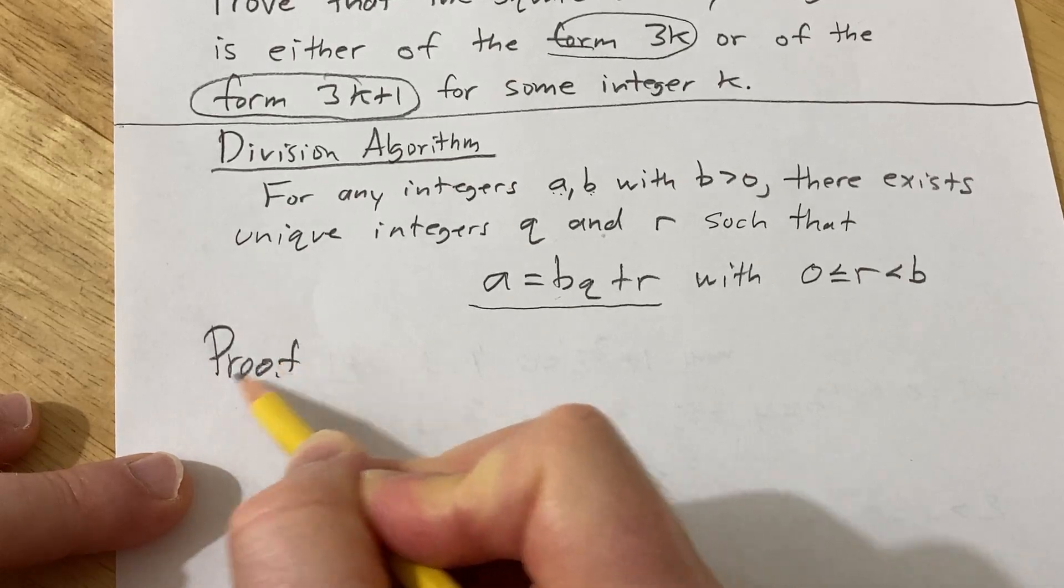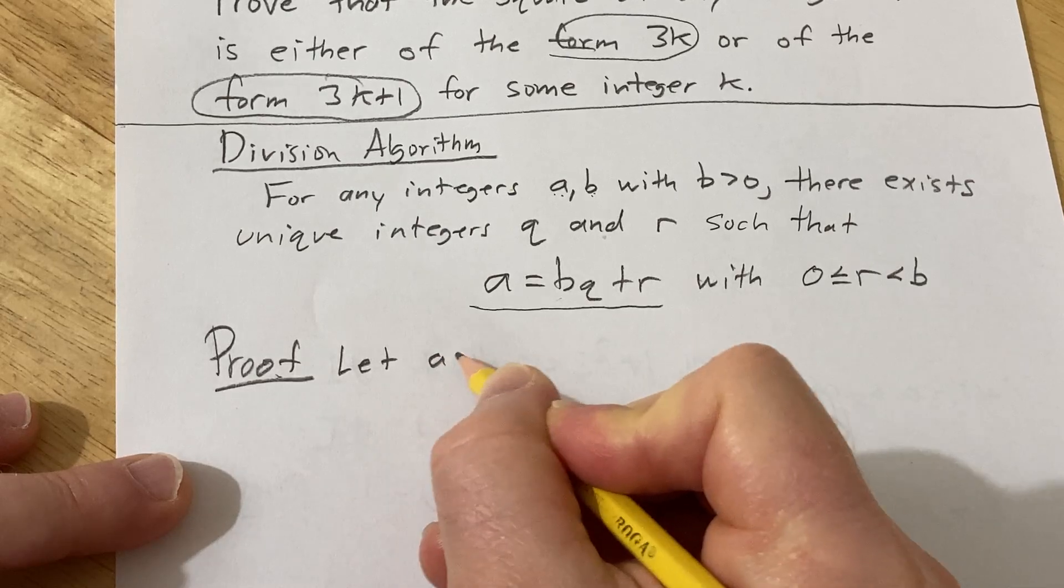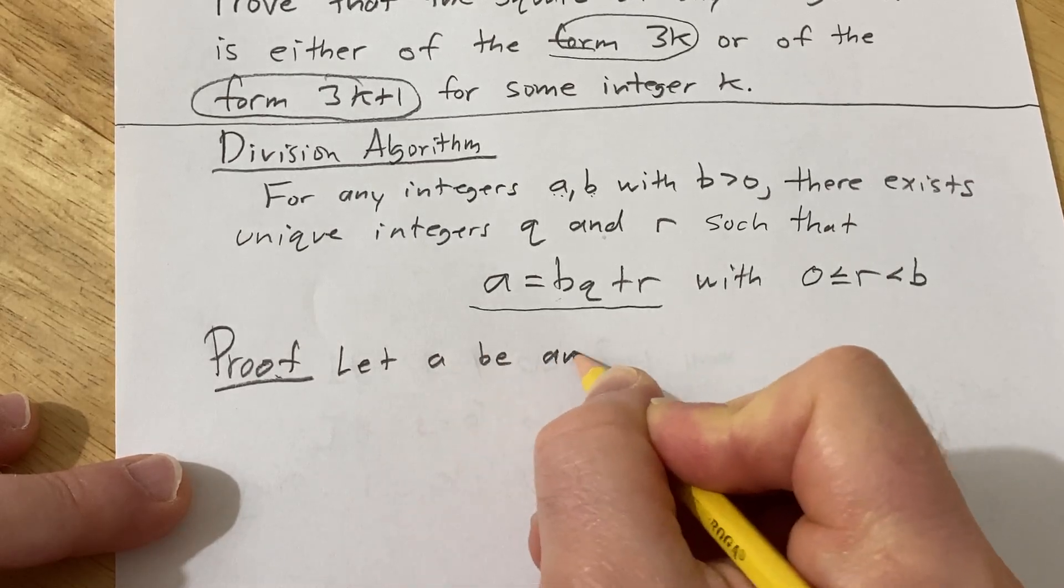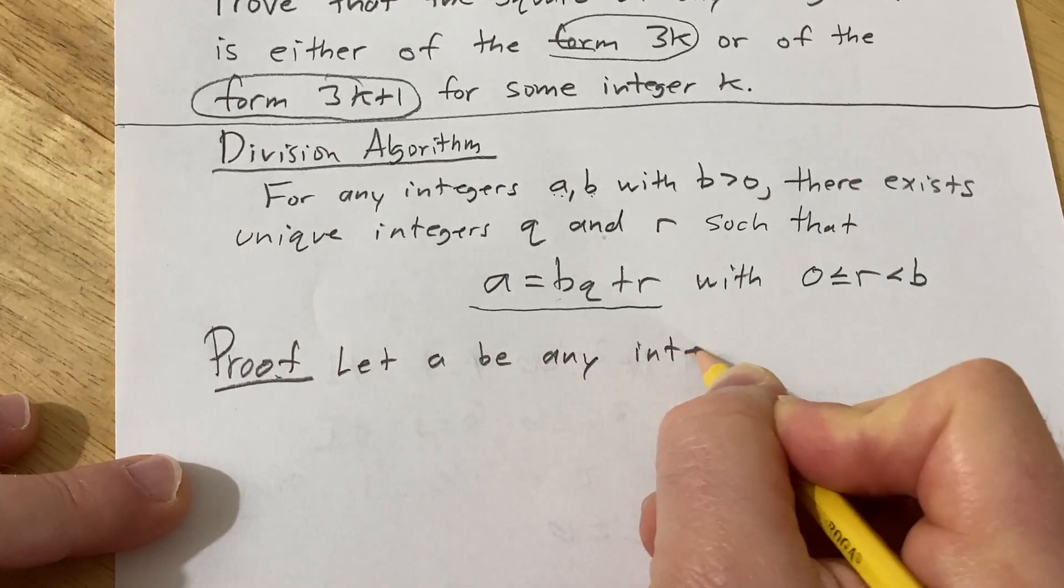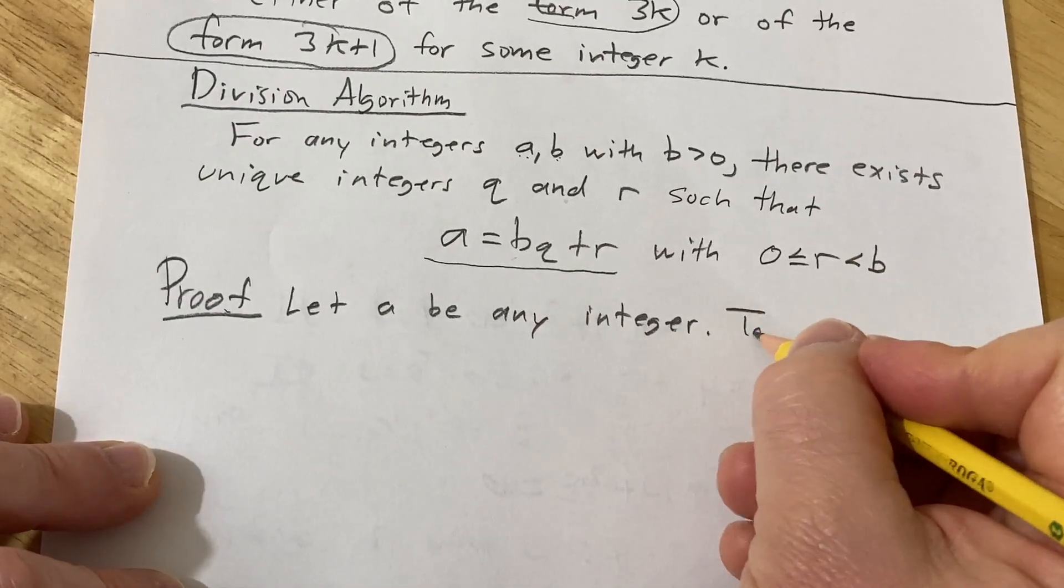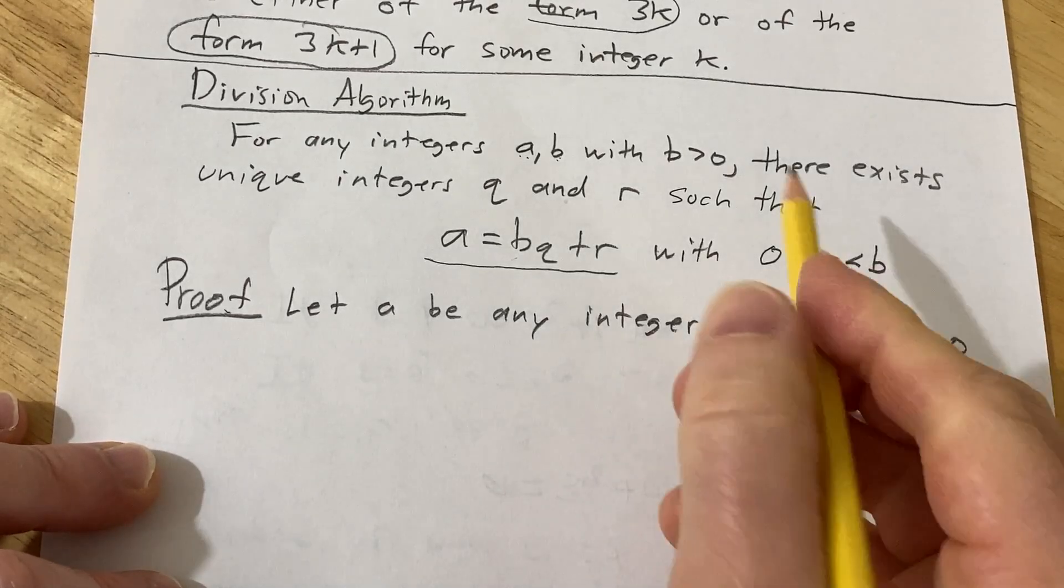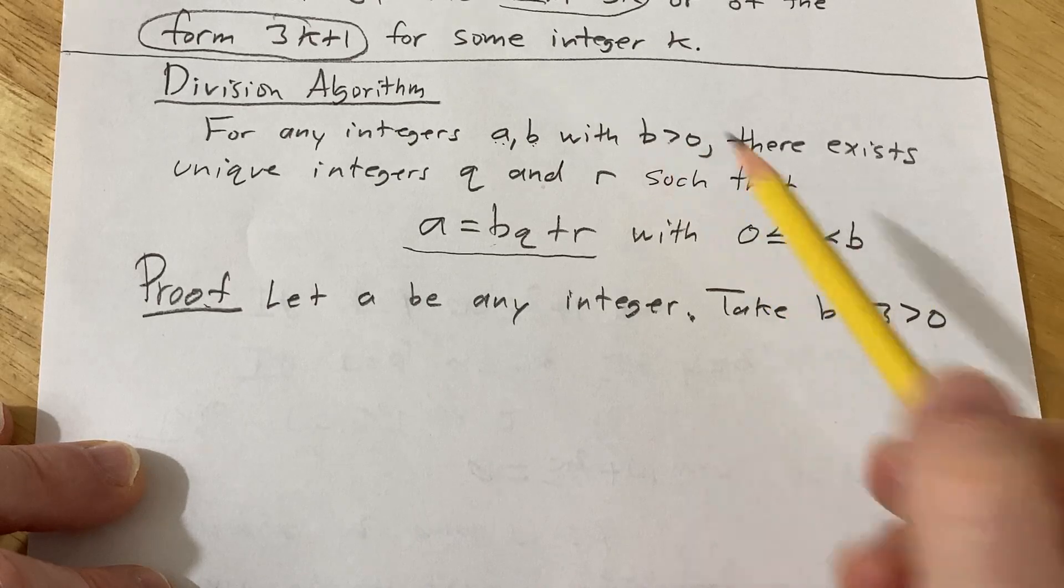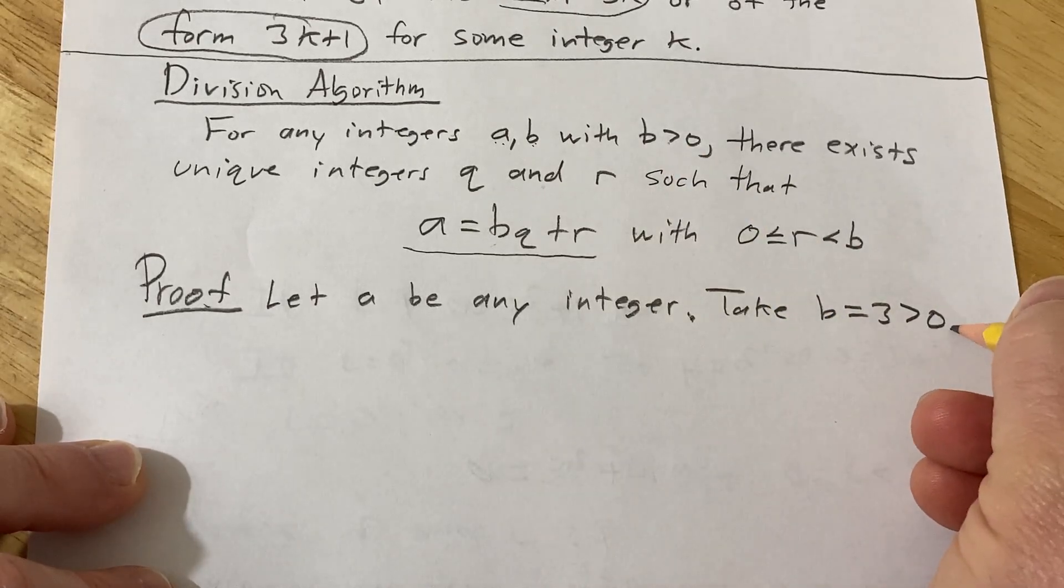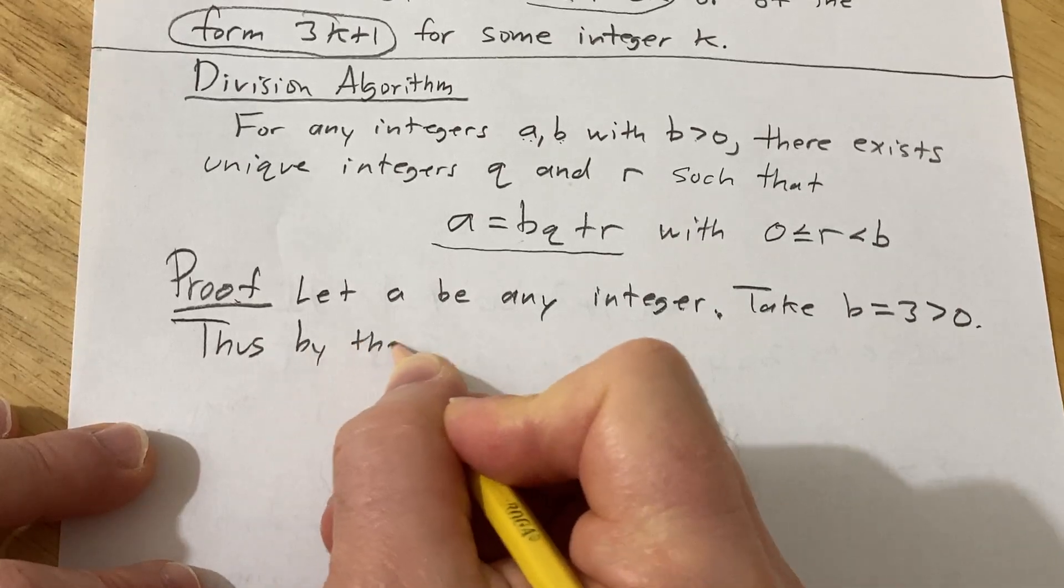Proof. Let a be any integer. Take b equals 3 which is positive so it satisfies the hypotheses of the division algorithm. Thus, by the division algorithm